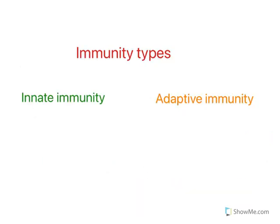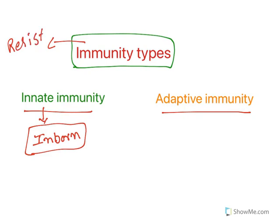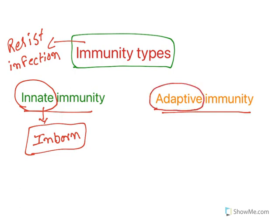There are broadly two different immunity types: innate immunity and adaptive immunity. Innate means inborn — when human beings are born they are gifted with immunity. Immunity means the ability to resist infection. This is conferred during birth and is known as innate immunity. Adaptive immunity will develop when human beings grow up; it is adaptive to that infection, hence it is known as adaptive immunity.